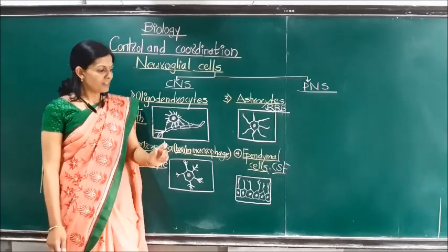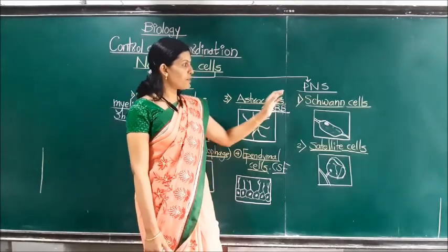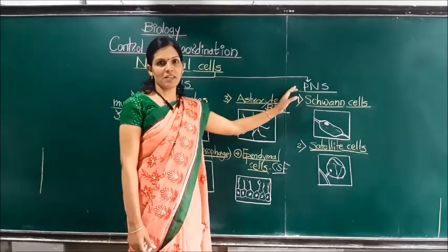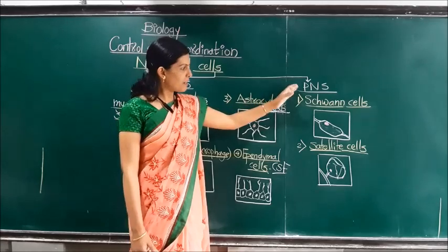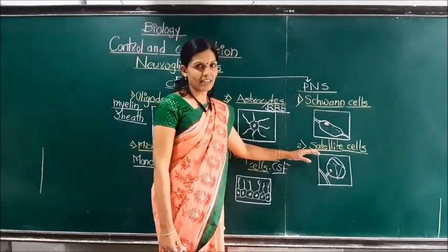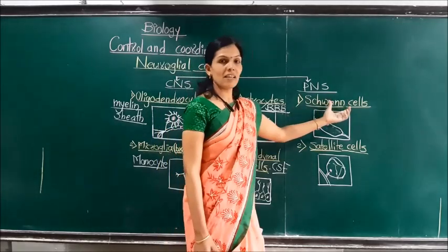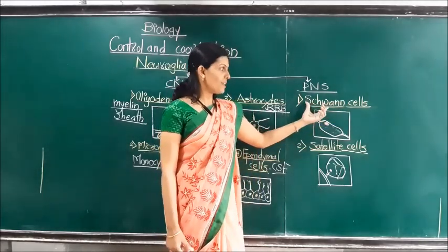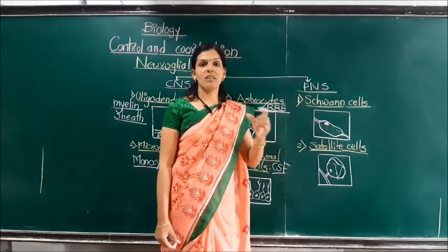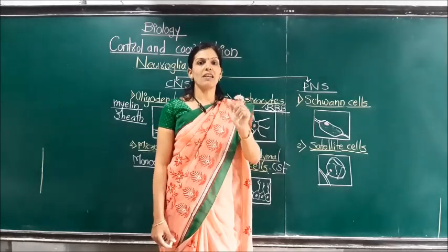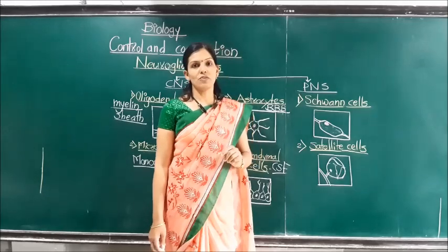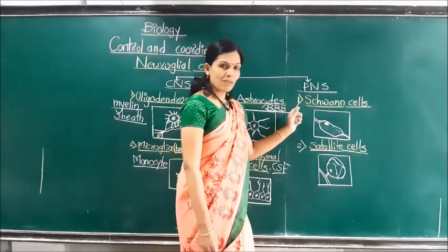Now we will focus on the neuroglial cells present in the peripheral nervous system. In the PNS there are two types of neuroglial cells: Schwann cells and satellite cells. Schwann cells are the most abundant neuroglial cells in the peripheral nervous system. They produce and form the myelin sheath around the nerve fiber, as seen in the structure of the nerve fiber discussed in the previous lecture.